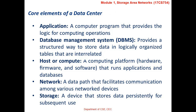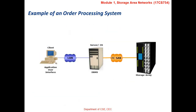Let us look at an example of an online order transaction system involving the five core elements of a data center. A customer places an order through a client machine over a LAN or WAN to the host running an order processing application. The client accesses the DBMS through the application to provide order-related information such as customer name, address, payment method, products ordered and quantity. The DBMS uses the host operating system to write this data to the physical disks in the storage array. The storage network provides the communication link between the host and the storage array, transporting read or write requests between them.